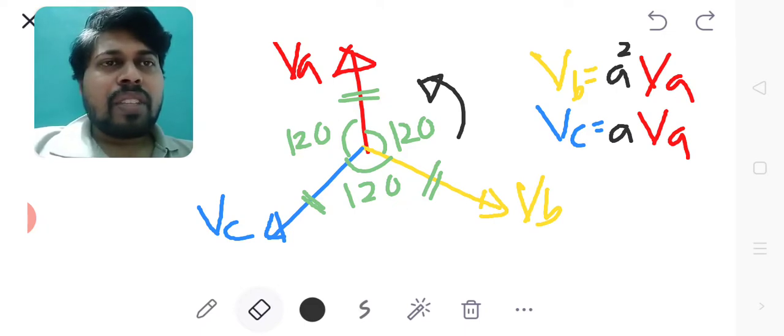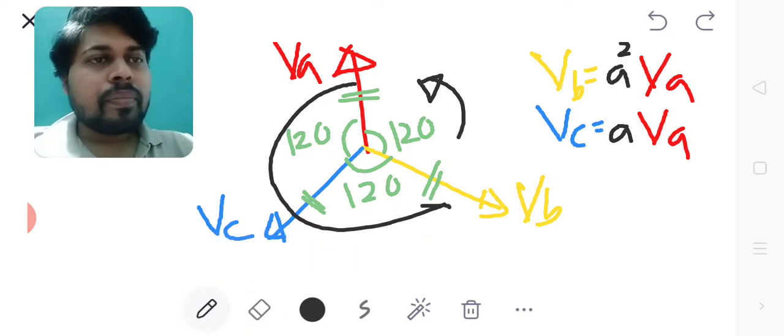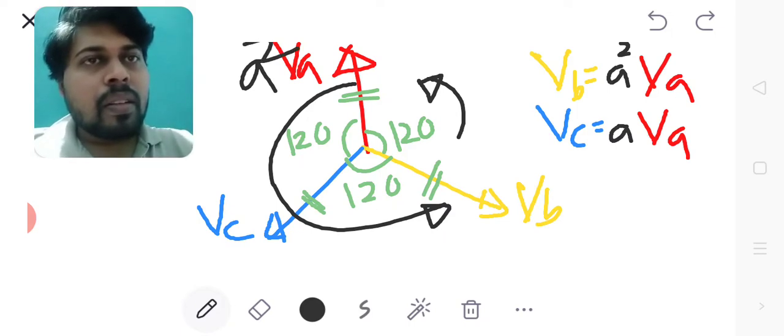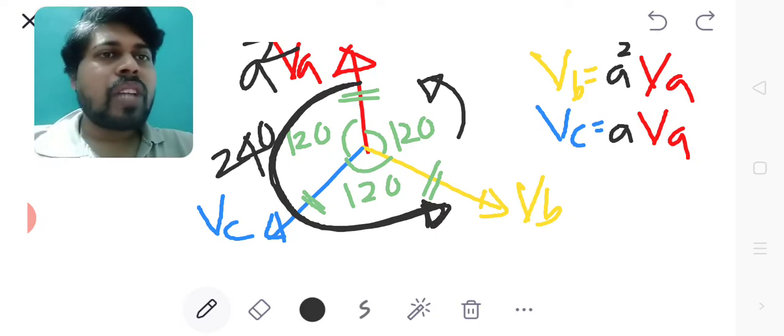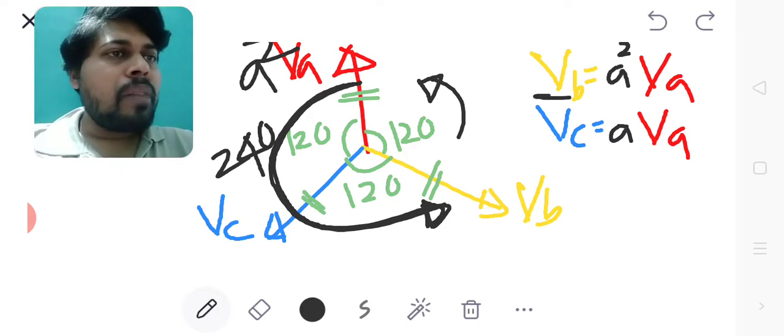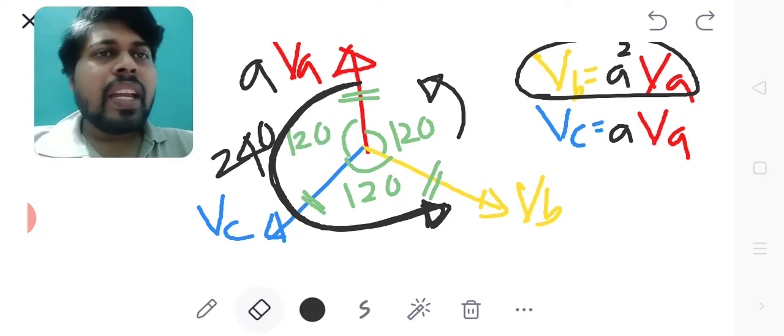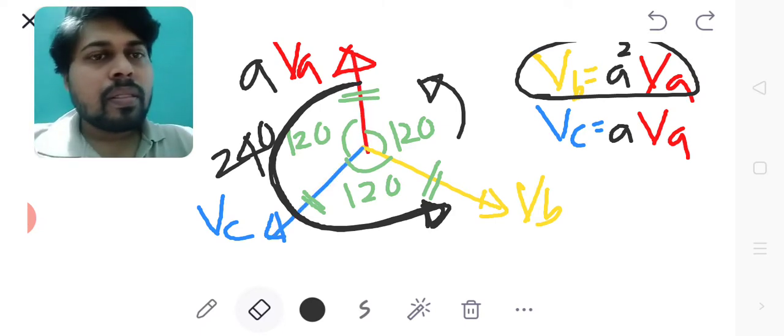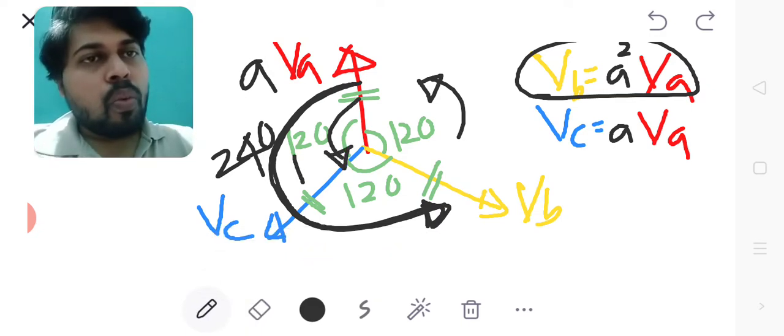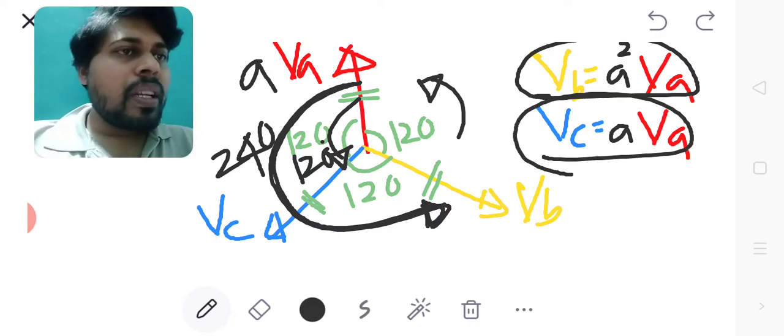By taking VA as a reference phasor and by the use of A operator, I can express VB and VC in terms of VA. If I multiply by A square, it will take a rotation of 240 degrees in anti-clockwise direction, and here VB will become A square VA. If I multiply by A to VA, it will take a rotation of 120 degrees in anti-clockwise direction and will reach the position of VC, and hence VC becomes A into VA.